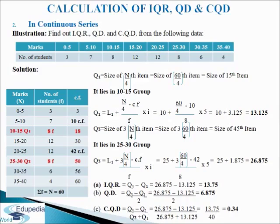Now we come to QD, that is quartile deviation. The formula is Q3 minus Q1 divided by 2. After putting in the values and calculating, we get 6.875 as quartile deviation. And the last is coefficient of quartile deviation, that is CQD. The formula is Q3 minus Q1 divided by Q3 plus Q1. After putting in the values and calculating, we get 0.34 as CQD. This is how we calculate IQR, QD and CQD in continuous series.